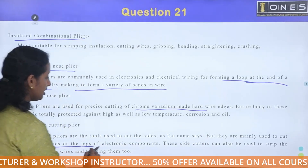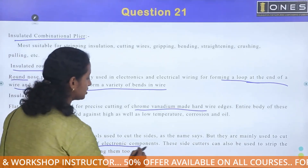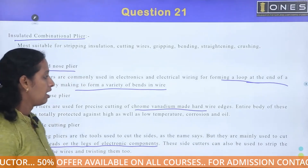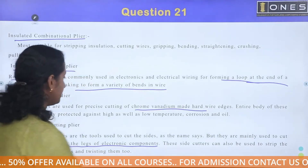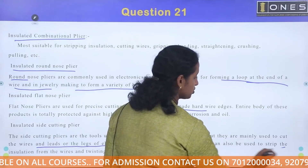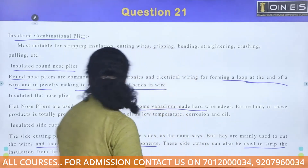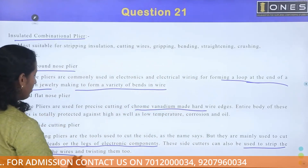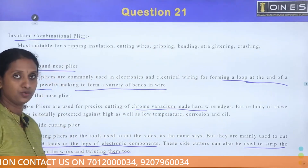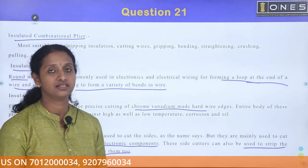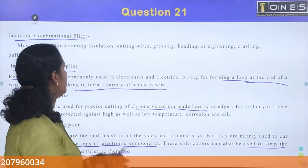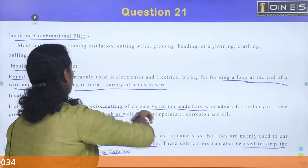Insulated side cutting pliers. These side cutters are also used to strip the insulation from the wires and for twisting them. It is used in the electronics lab for different tasks.